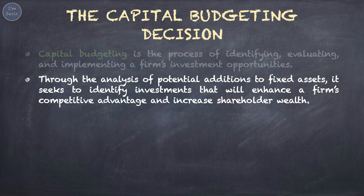Through the analysis of potential additions to fixed assets — and it is important to note the keyword 'fixed assets' — capital budgeting involves the consideration of investments in fixed assets, such as purchasing machines or equipment. It seeks to identify investments that will enhance a firm's competitive advantage and increase shareholder wealth. Competitive advantage is an attribute that enables a company to perform better than its competitors. To increase shareholder wealth is the same as to increase the share price or the value of the company, in line with the goal of shareholder wealth maximization.